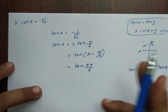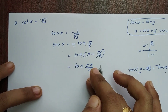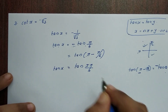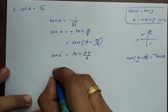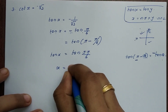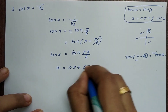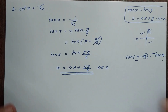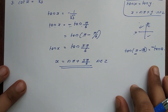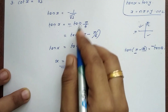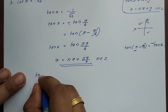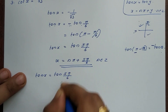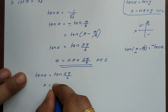So the general solution is x equals nπ plus 5π/6, where n belongs to Z. The principal solution from the second quadrant is x equals 5π/6.